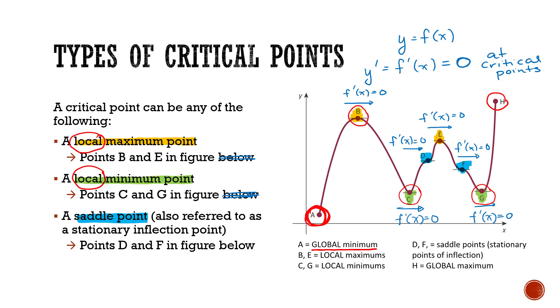Similarly, with the maximums B and E here, they are not the overall maximum. H here is the overall maximum for this function over this range that we've illustrated. So it would be referred to as the global maximum.